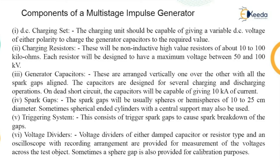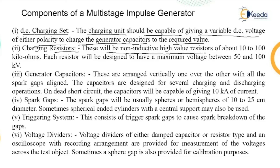There are certain components used in the circuit. The first is the DC charging unit, which should be capable of giving a variable DC voltage of either polarity to charge the generator capacitors to the required value. Charging resistors are non-inductive high value resistors of about 10 to 100 kilohms, with each resistor designed for a maximum voltage of 50 to 100 kilovolt.